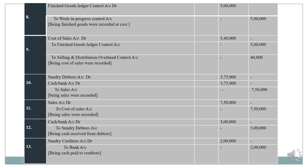Next entry: receipt from debtors — cash or bank account debit to sundry debtors account, being cash received from debtors, amount 3,00,000. Last entry: payment to creditors — amount 2,00,000. When you pay the creditors, creditors account is debited. Sundry creditors account debit to bank account. This completes the solution.